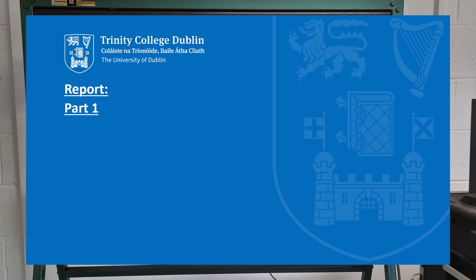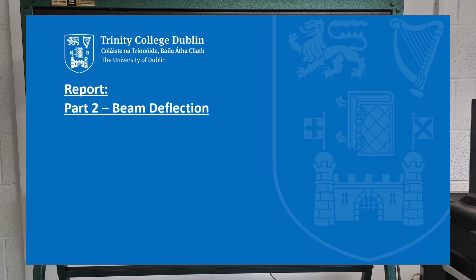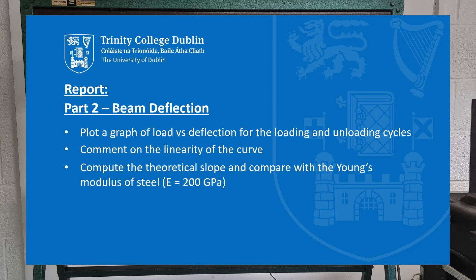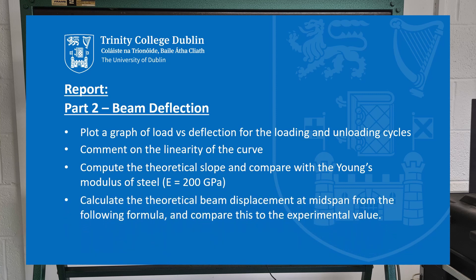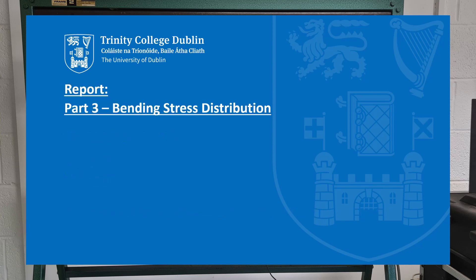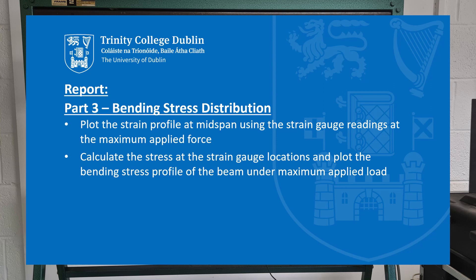The report consists of three parts. Part 1: Draw the bending moment and shear force diagrams for the beam at maximum force applied. Part 2 - Beam deflection: Plot a graph of load on the y-axis versus deflection on the x-axis for the loading and unloading cycles. Comment on the linearity of the curve. Compute the theoretical slope and compare with the Young's modulus for steel. Calculate the theoretical beam displacement at mid-span from the following formula and compare this to the experimental value. Comment on the results. Part 3 - Bending stress distribution: Plot the strain profile at mid-span using the strain gauge readings at maximum applied load. Calculate the stress at the strain gauge locations and plot the bending stress profile of the beam under maximum applied load.